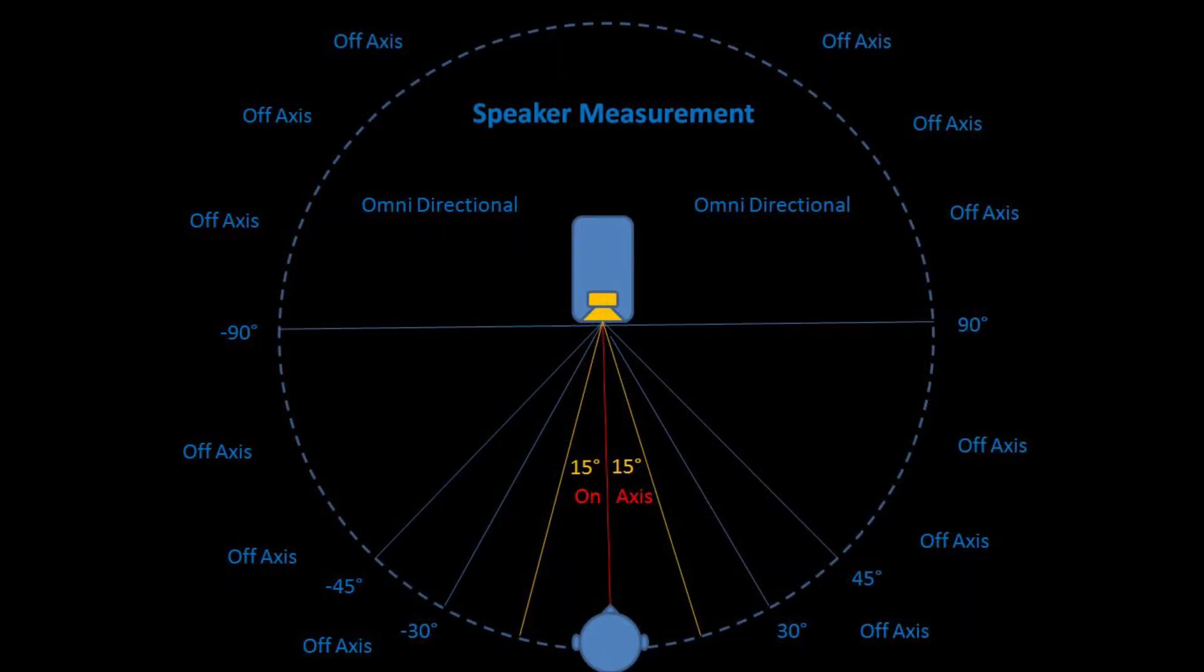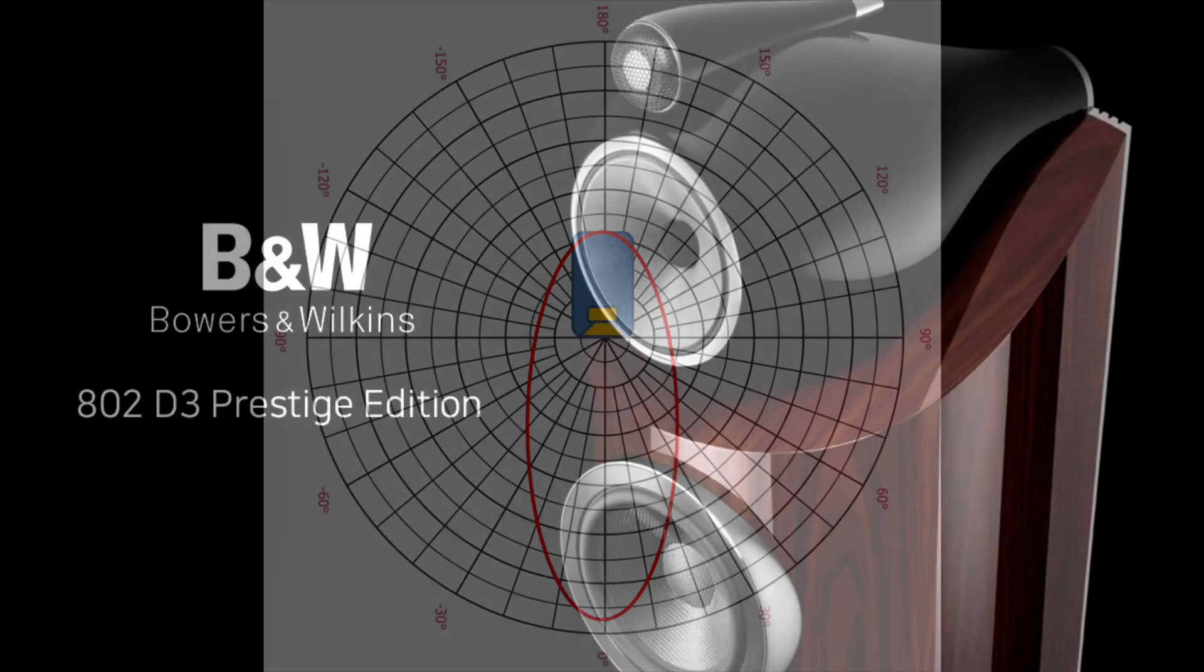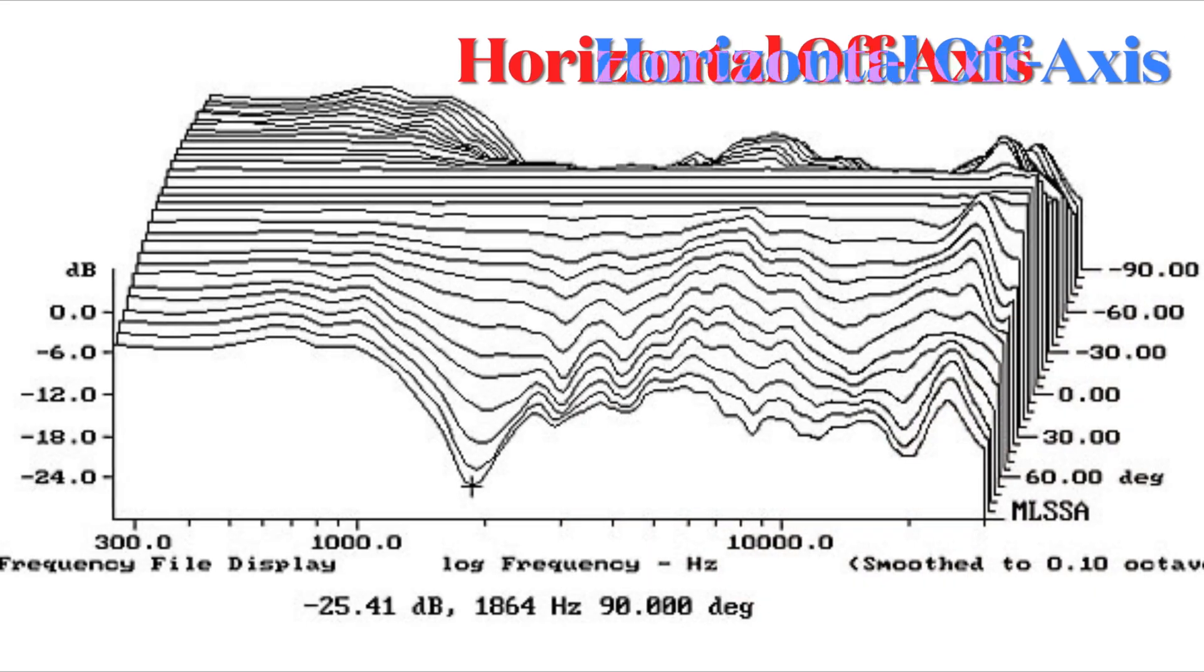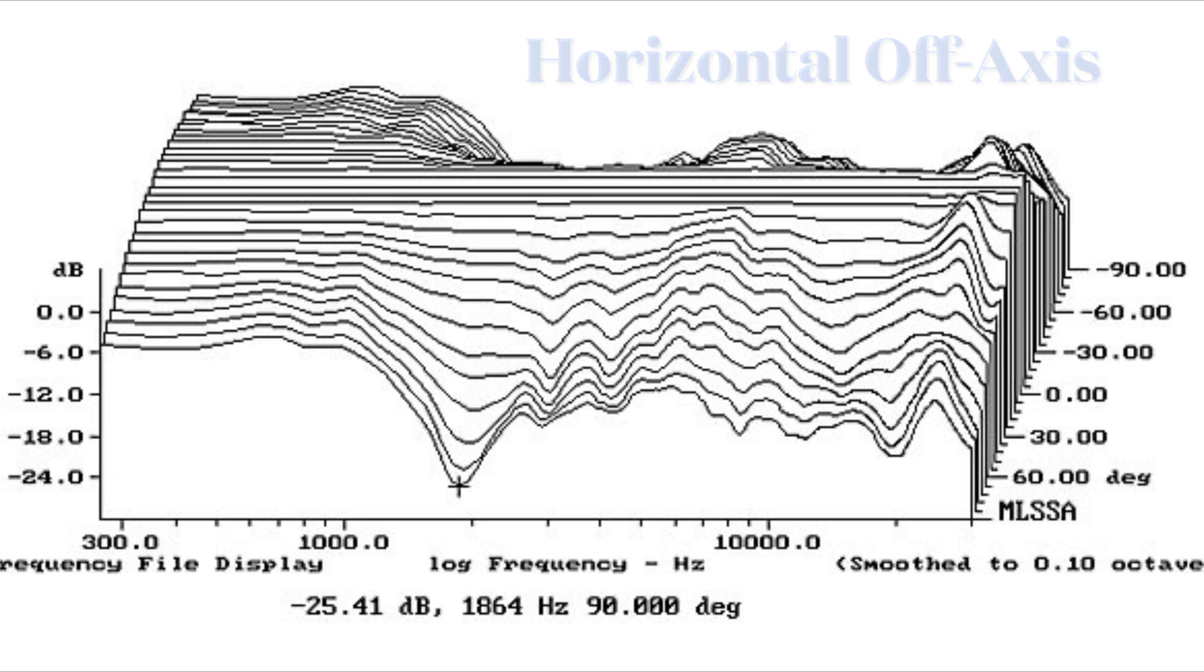Directivity means at certain frequency the speaker off-axis response will have lower output sound pressure at different angles from the center of the speaker or front of the speaker. Here is the example for B&W 802D3 that you can see at around 2 kHz area the off-axis frequency response is dipping down gradually with the horizontal off-axis angles.